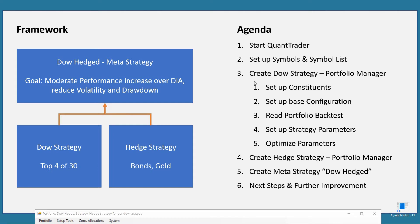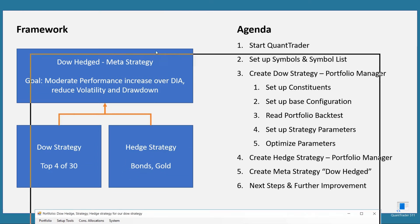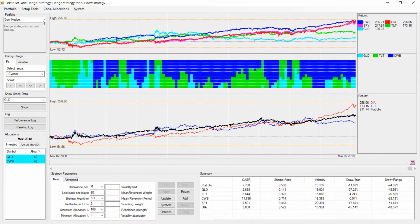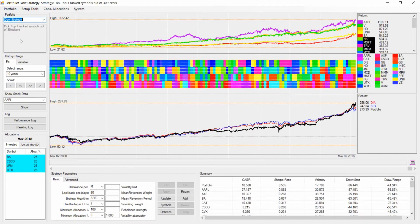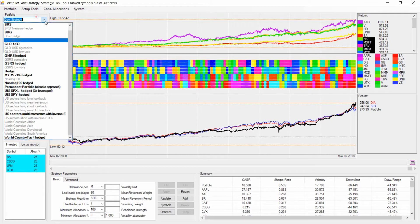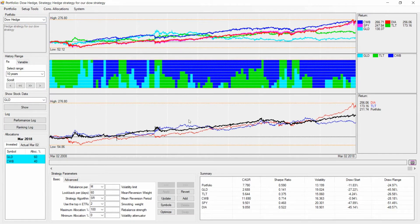Welcome back. In the previous tutorials we set up a DAo strategy picking the top four out of 30 DAo tickers, and in the last one we set up the hedge strategy out of convertibles, 20-year treasuries, and gold. What we're going to do now is combine these two to create a meta strategy. Here is the Dow strategy with its statistics, and we also have our Dow hedge with its statistics.